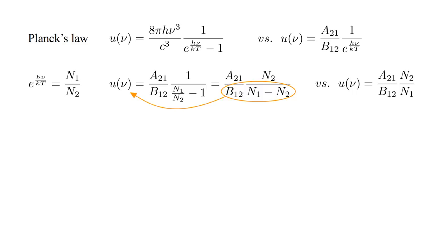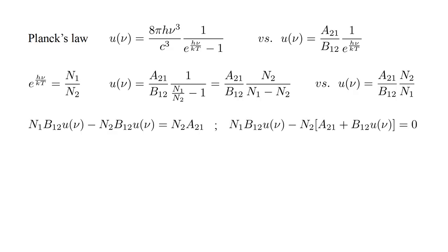Multiplying through by B-one-two times N-one minus N-two, we get N-one, B-one-two, u of nu, minus N-two, B-one-two, u of nu, equals N-two, A-two-one. Moving all terms to the left-hand side and combining the two N-two terms, we identify the expression for the equilibrium of absorption and emission. The absorption term is the same as before, but now the emission term has N-two multiplied by a sum of two terms. For consistency of notation, let's define B-two-one equal to B-one-two.